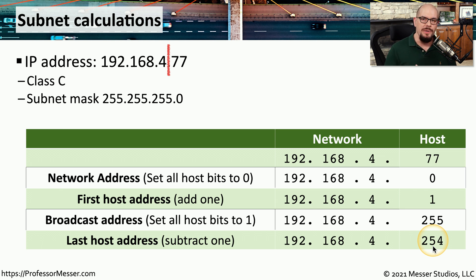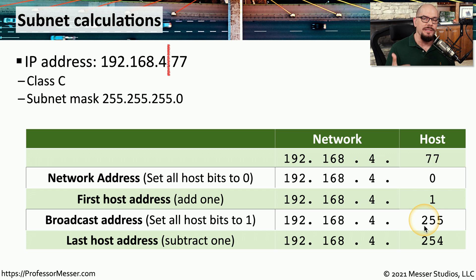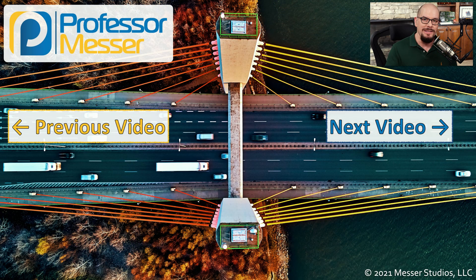By using these rules, you can easily calculate all of these values for IP addresses that have subnet masks correlating to a Class A, Class B, or Class C subnet mask. You may find that IP addresses on your network use these delineations at each octet point, which makes calculation very easy. But these days we're able to subnet into any of these octets, and in future videos we'll look at how to perform calculations using classless subnetting.